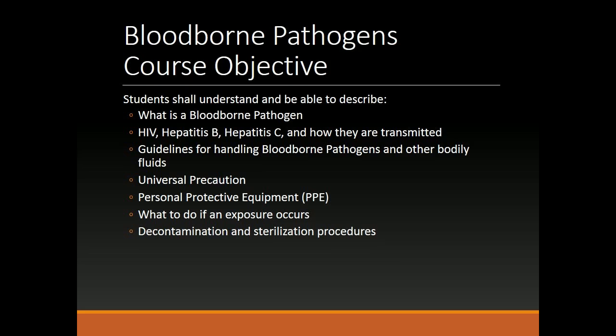Bloodborne Pathogens. Course Objective. Students shall understand and be able to describe: what is a bloodborne pathogen; HIV, Hepatitis B, Hepatitis C, and how they are transmitted; guidelines for handling bloodborne pathogens and other bodily fluids; universal precautions; personal protective equipment (PPE); what to do if an exposure occurs; and decontamination and sterilization procedures.